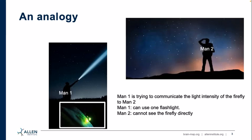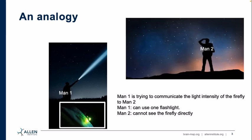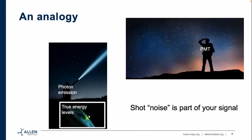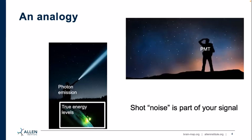In this analogy, man two is our PMT and man one is the photon emission. I argue that shot noise is actually part of your signal — the fluctuations arise because we're not giving enough time to communicate very low values with these bright photons. This has consequences for the entire processing pipeline. The large fluctuations cause issues with motion correction, segmentation, extracting traces, and extracting events. This is the core problem in two-photon microscopy.